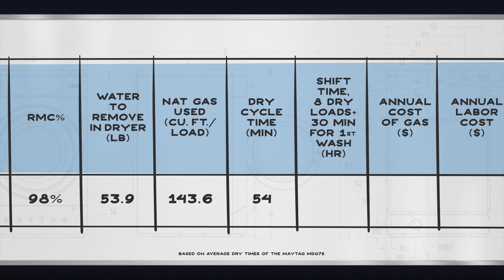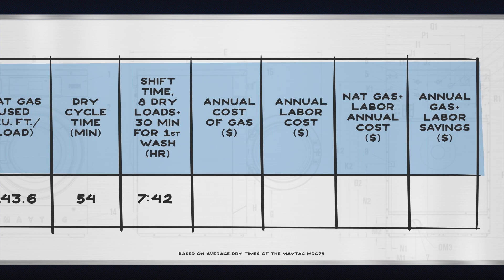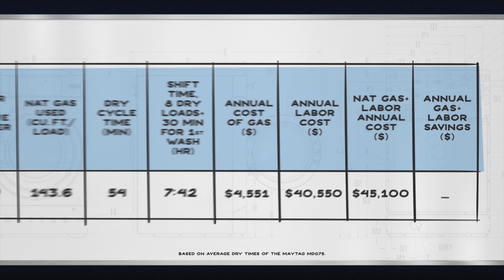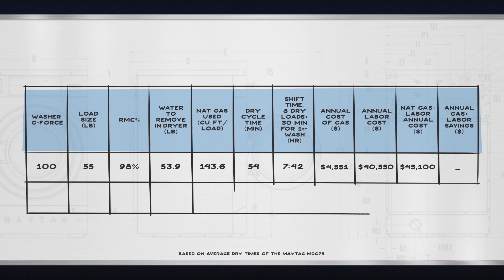Making the total shift time seven hours and 42 minutes for all eight loads. Adding labor and gas utility costs together, your annual operating expense comes out to forty-five thousand one hundred dollars.